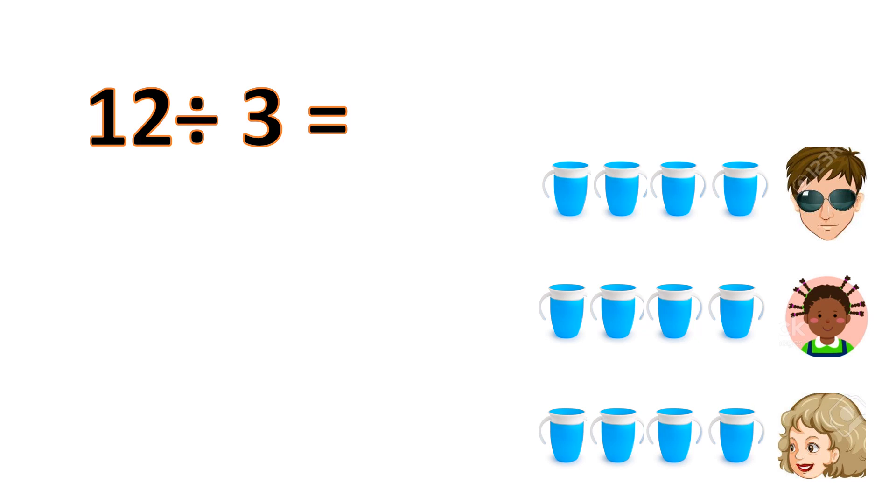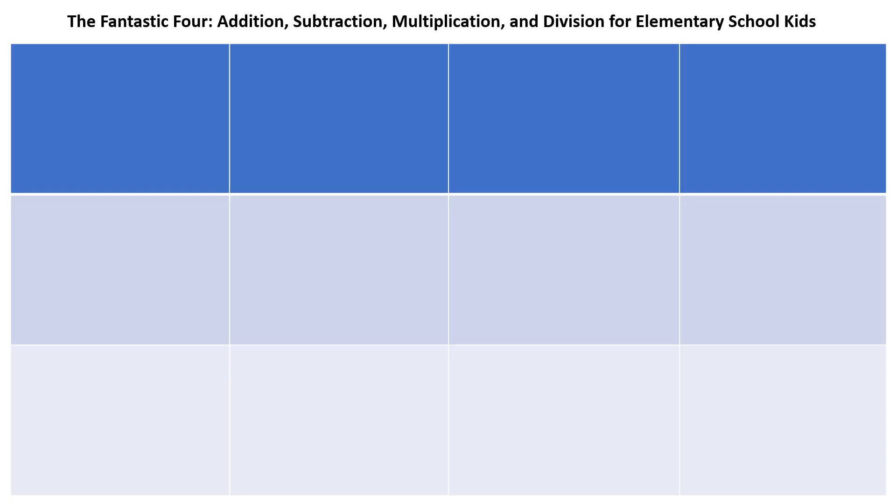Summarily, understanding the four fundamental operations of mathematics is crucial for elementary school kids. Addition helps us join groups, subtraction helps us take away, multiplication helps us add groups together, and division helps us share equally.